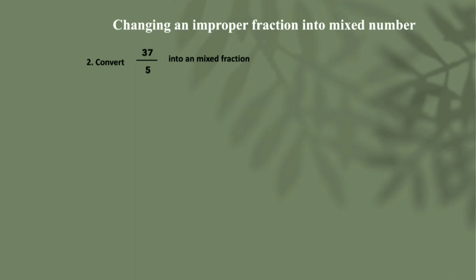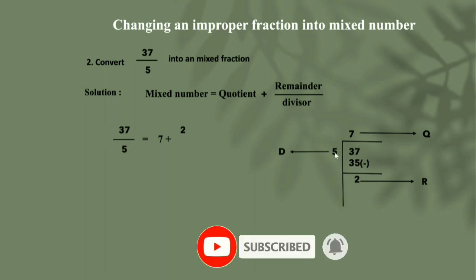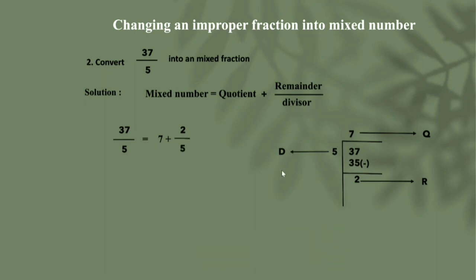Next example: convert 37 by 5 into a mixed fraction. Mixed number equals quotient plus remainder by divisor. We divide 37 by 5 and get quotient 7 and remainder 2. So 37 by 5 equals 7 plus 2 by 5, which equals 7 and 2 by 5.